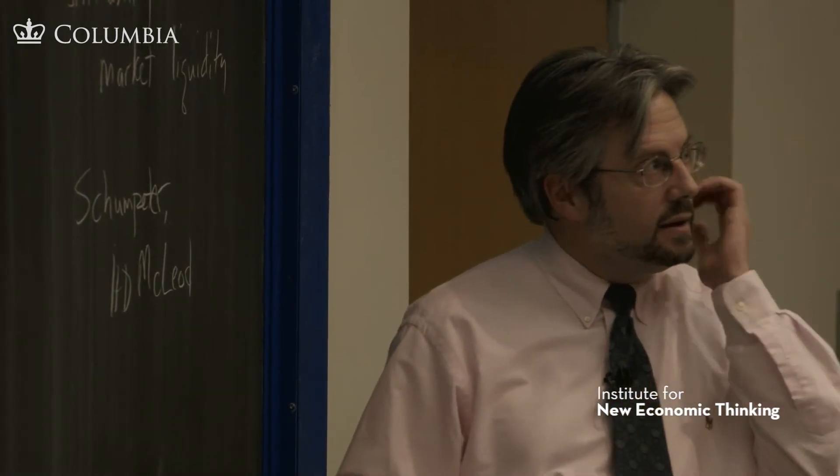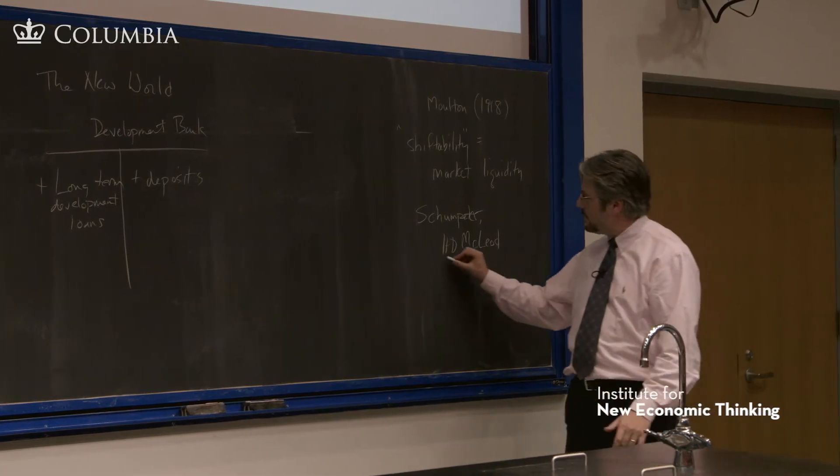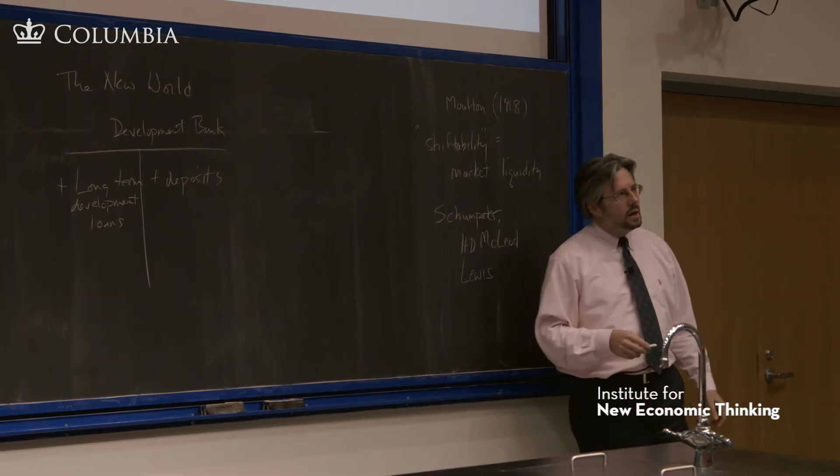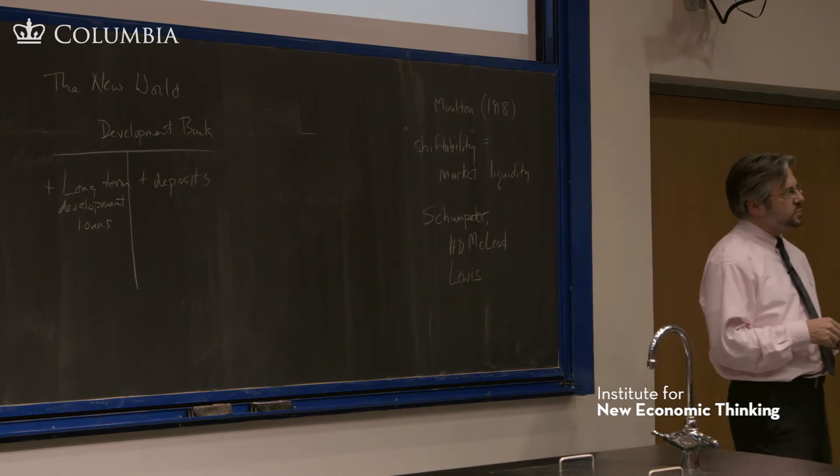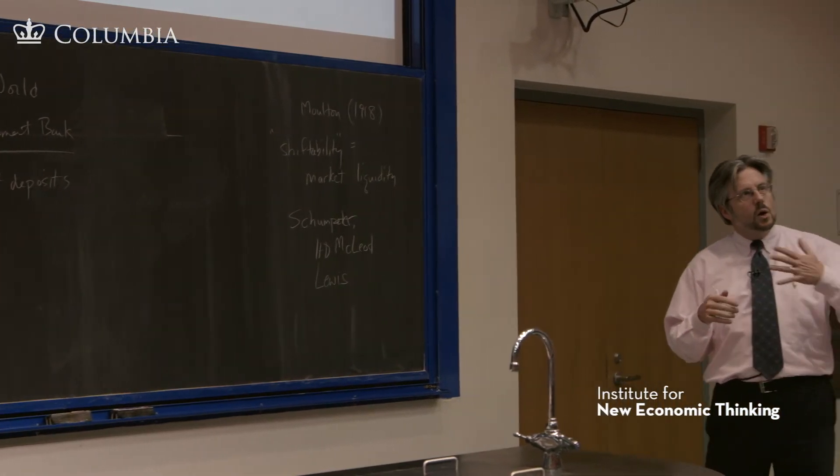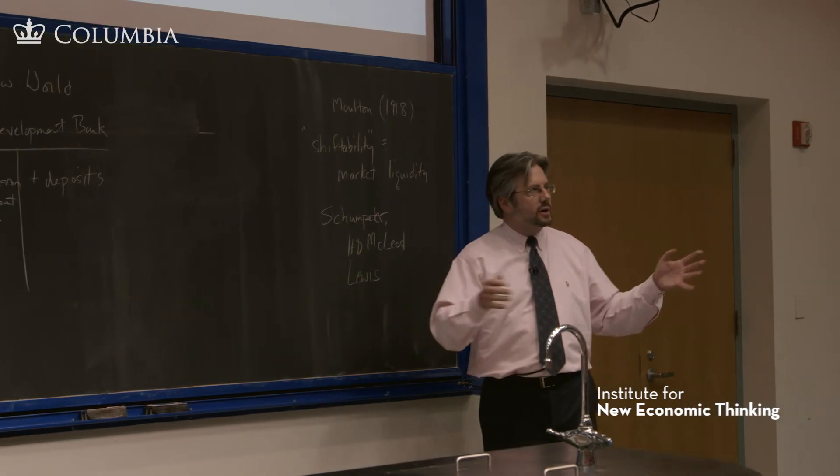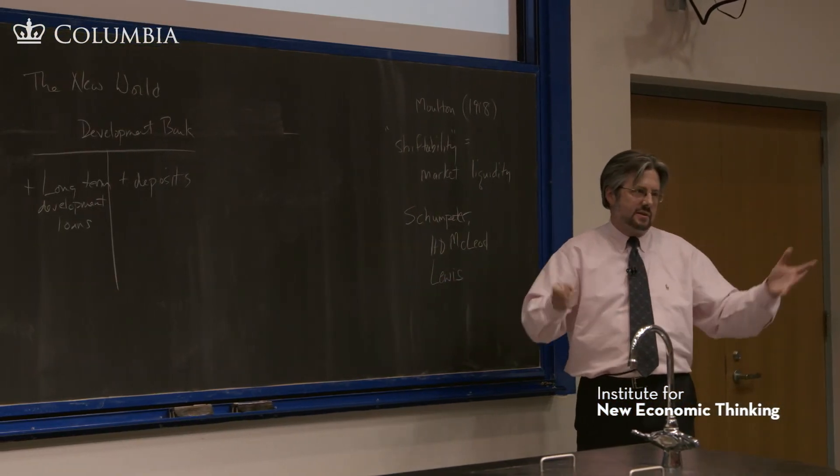If you've had a course in economic development, you might have come up against the Lewis model, which is about an economy where most of the labor force is working in subsistence agriculture and is very unproductive because they're just living on the farm there.